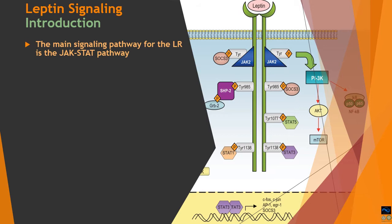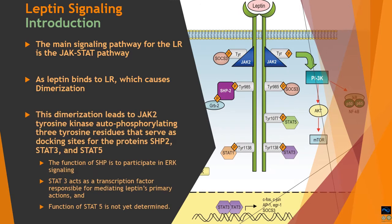The main signaling pathway for leptin receptor activation is the JAK-STAT pathway. When leptin binds to its receptor, it causes dimerization — two single polypeptides of the receptor come close together, similar to the insulin receptor. This dimerization leads to activation of intrinsic phosphorylating capability, causing autophosphorylation in the cytoplasmic domain at specific residues: tyrosine 985, tyrosine 1077, and tyrosine 1138.